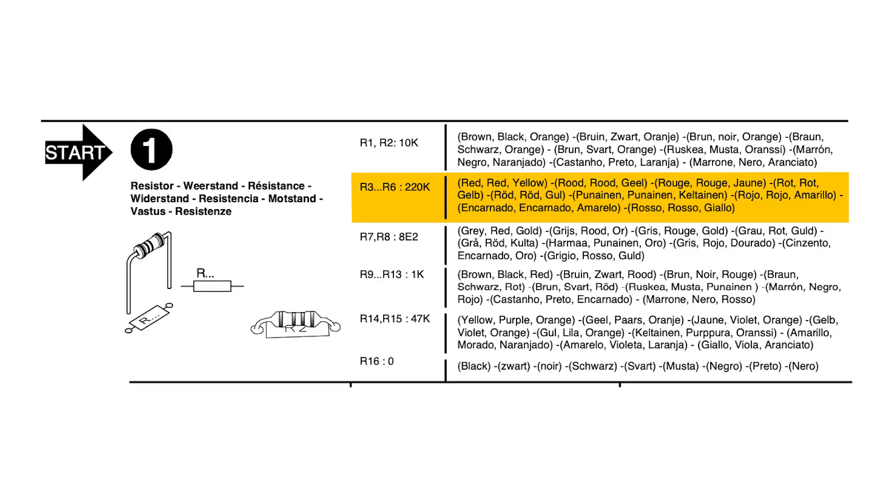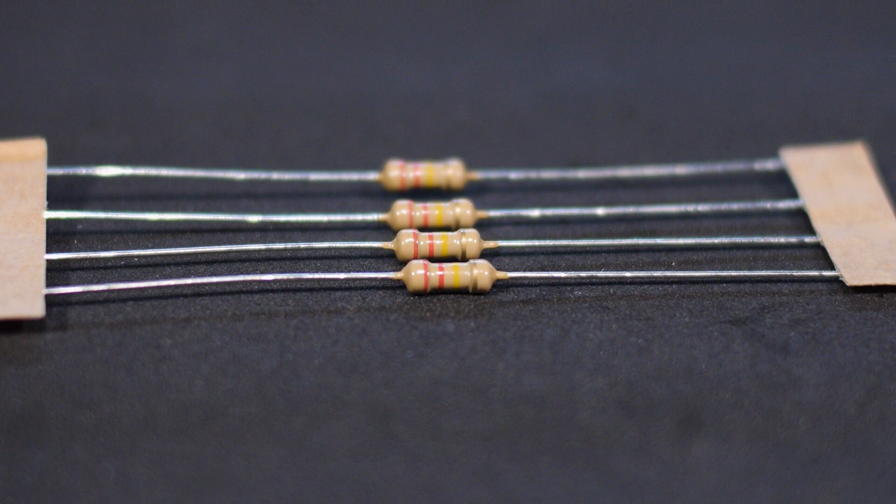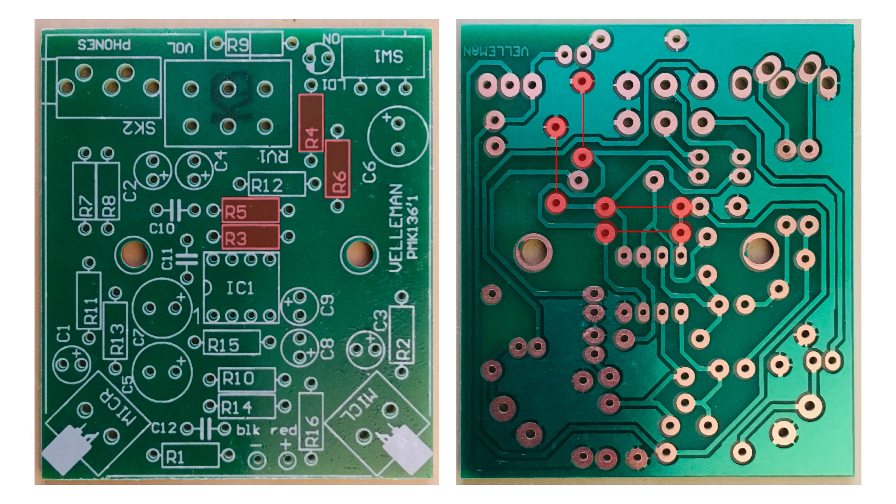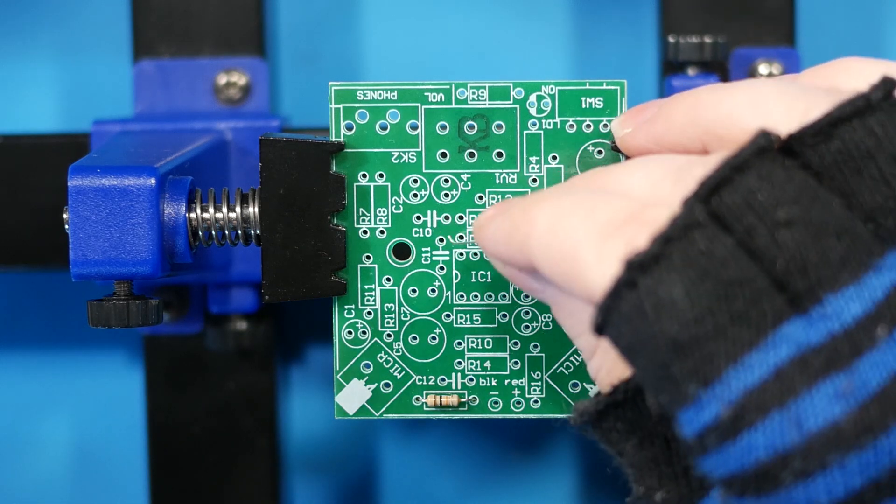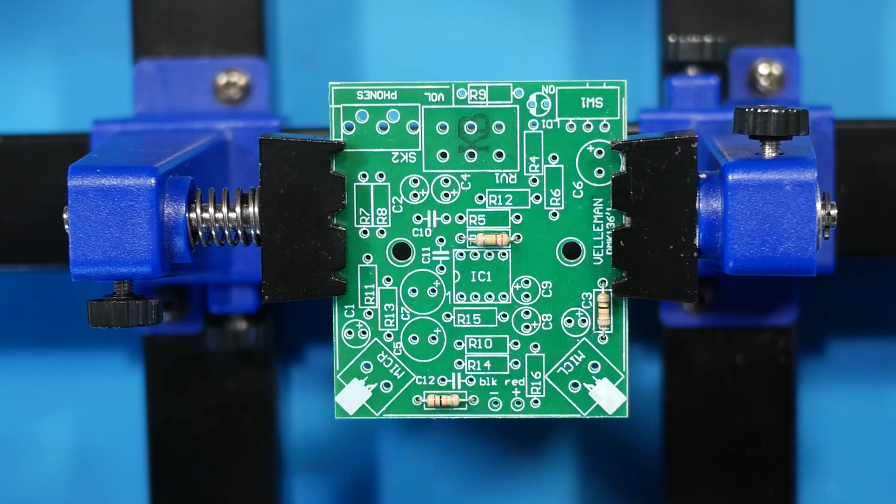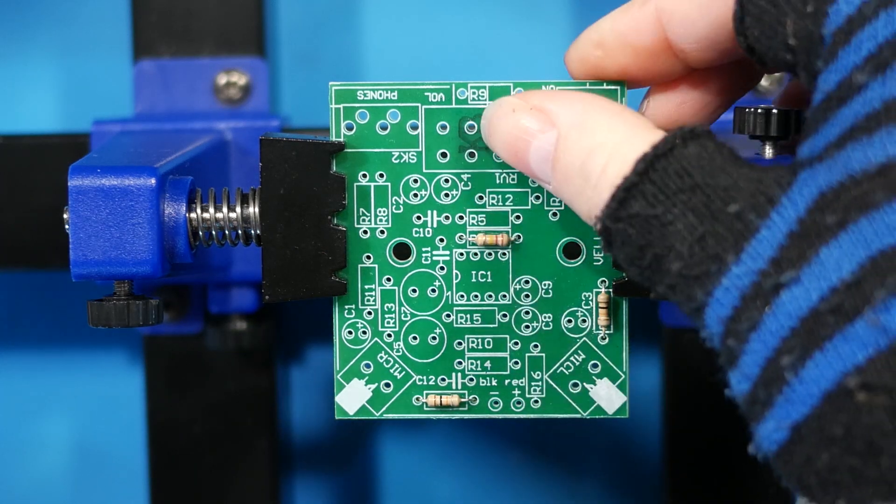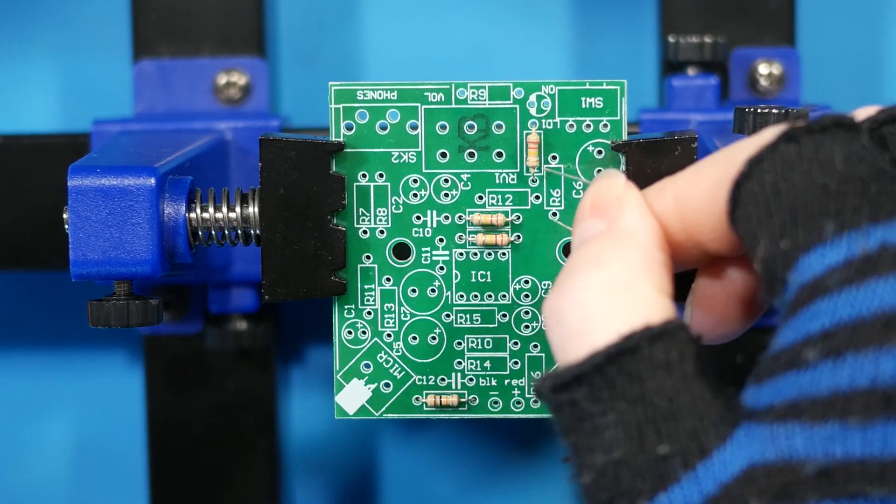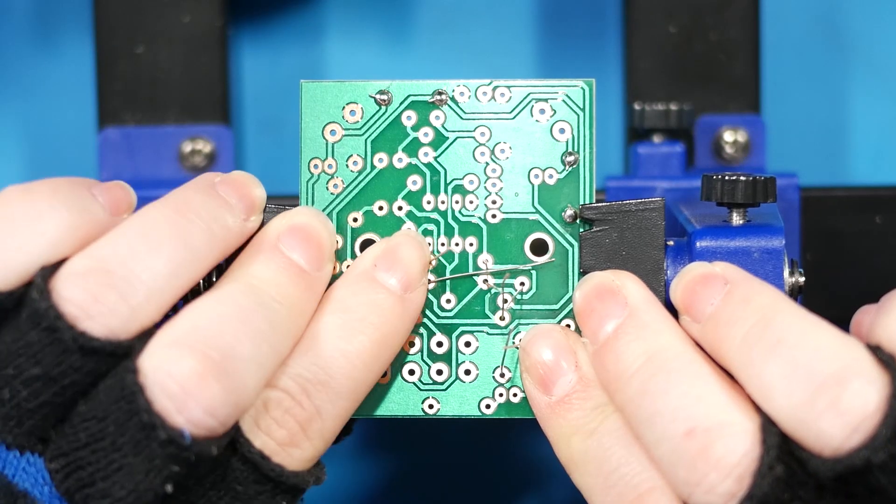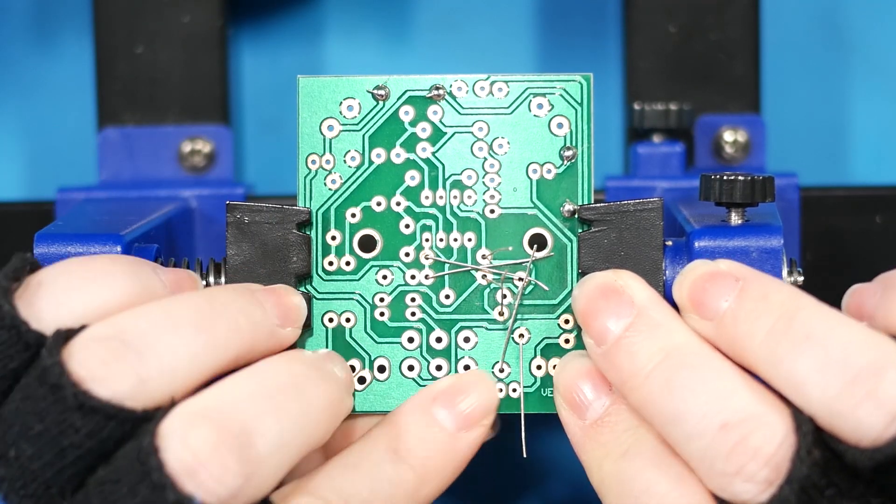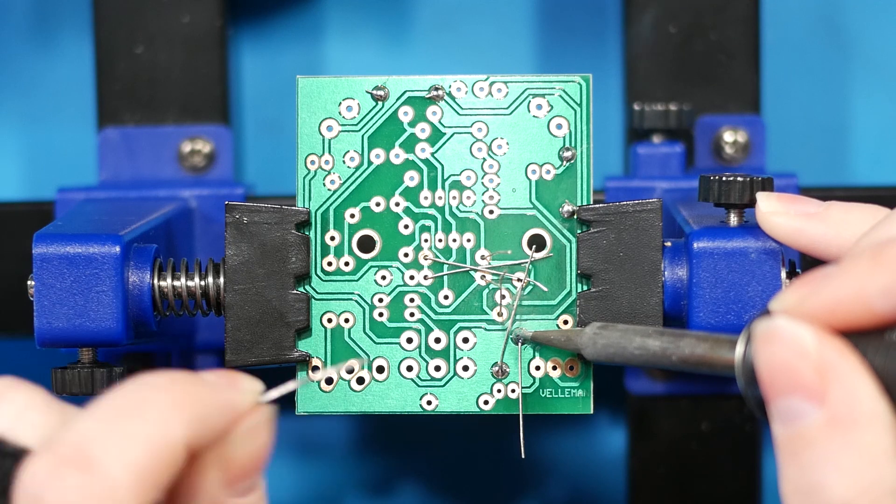R3 through R6 are 220k ohm. These are the four attached resistors: red, red, yellow. Place them on R3, R4, R5, and R6. Careful when bending the leads over to not accidentally make any unintended connections between pads.